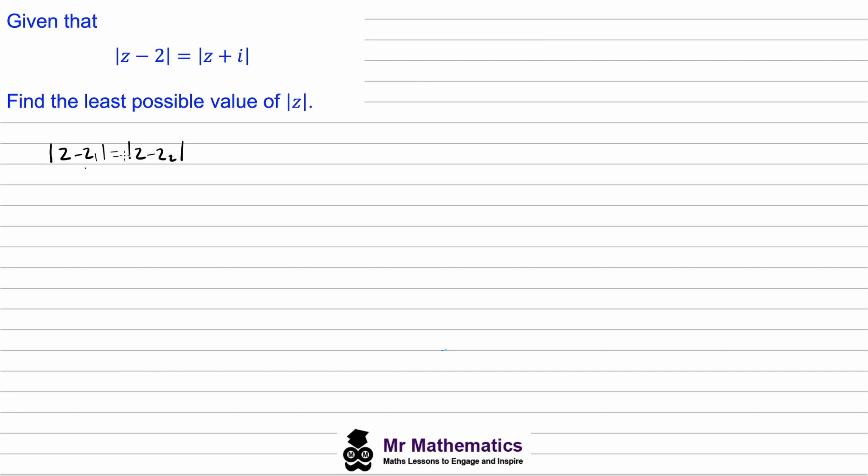representing this on an Argand diagram where we've got the two fixed points z1 and z2, the locus of the points between them would be a perpendicular bisector.